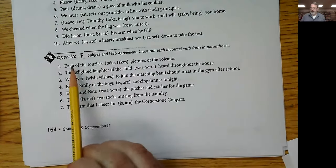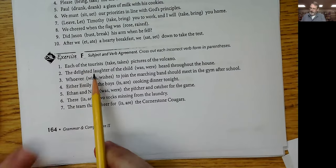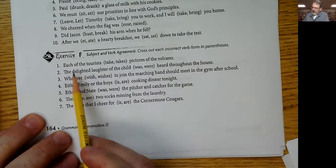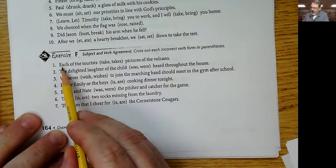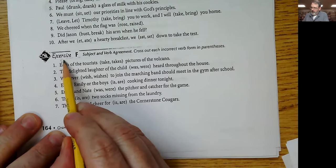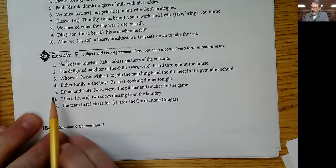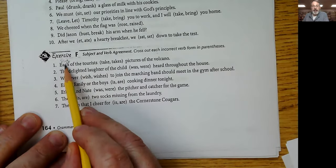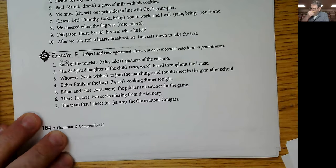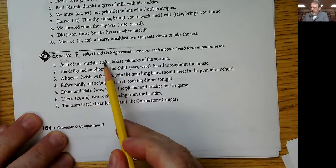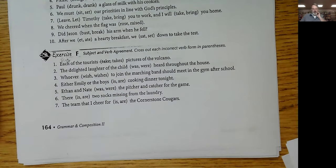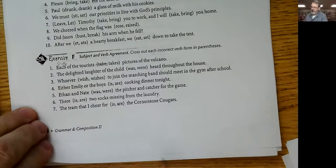Exercise F — subject and verb agreement. Cross out the incorrect verb form in parentheses. 'Each of the tourists take or takes pictures of the volcano.' 'Each' is singular — 'of the tourists' is there to throw you off. If it were 'John,' you'd say 'John takes.' So: 'Each of the tourists takes pictures of the volcano.' Do that for each of these.